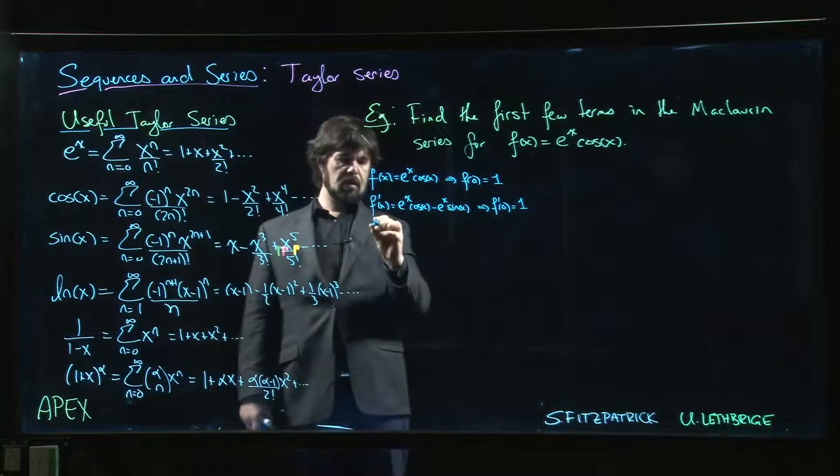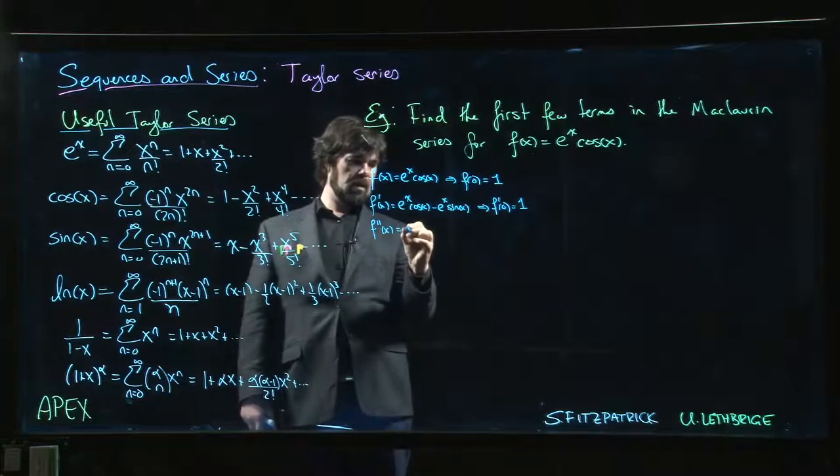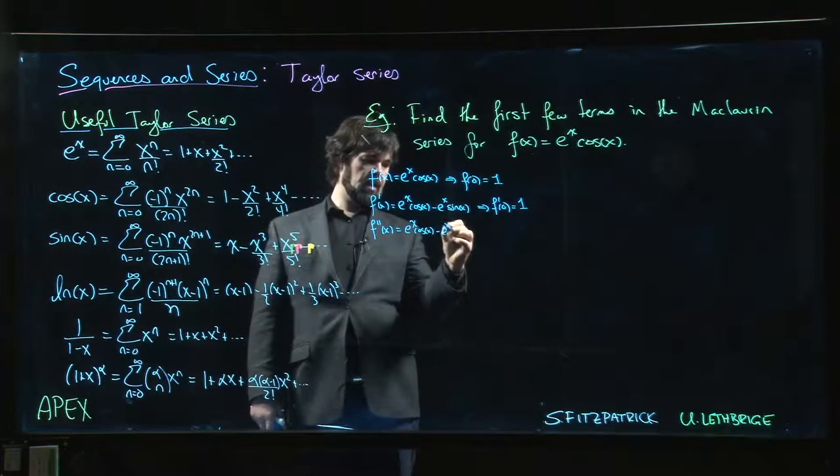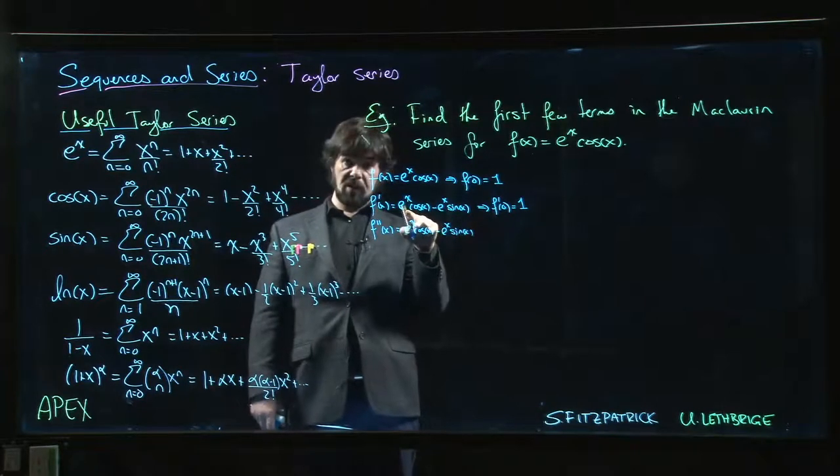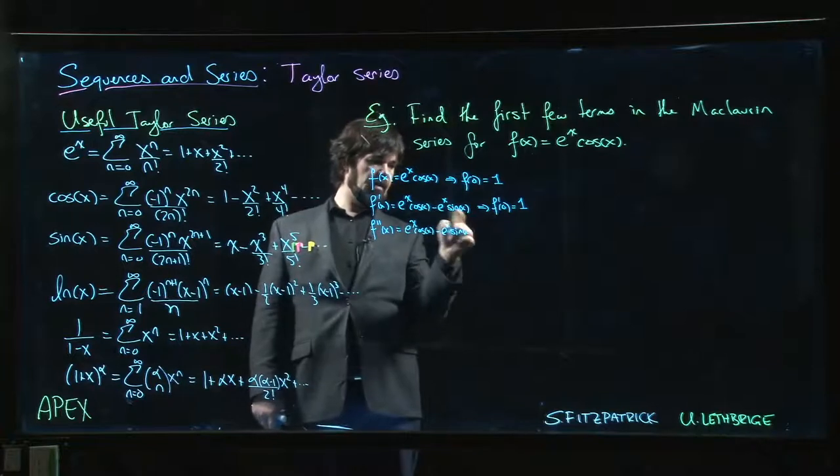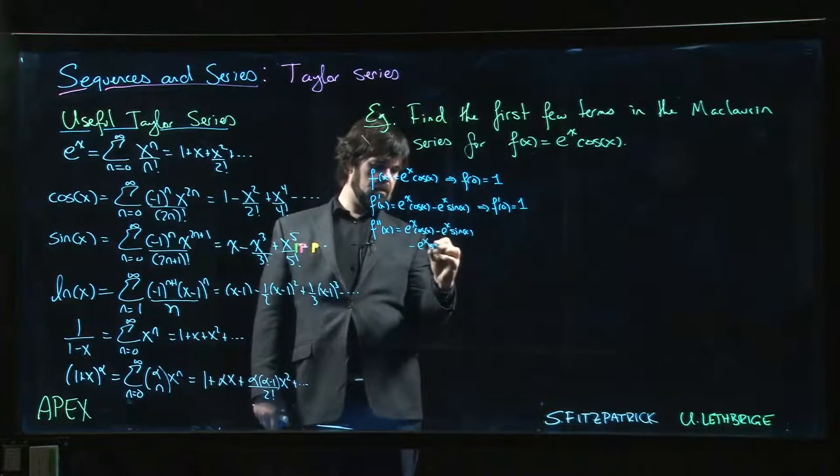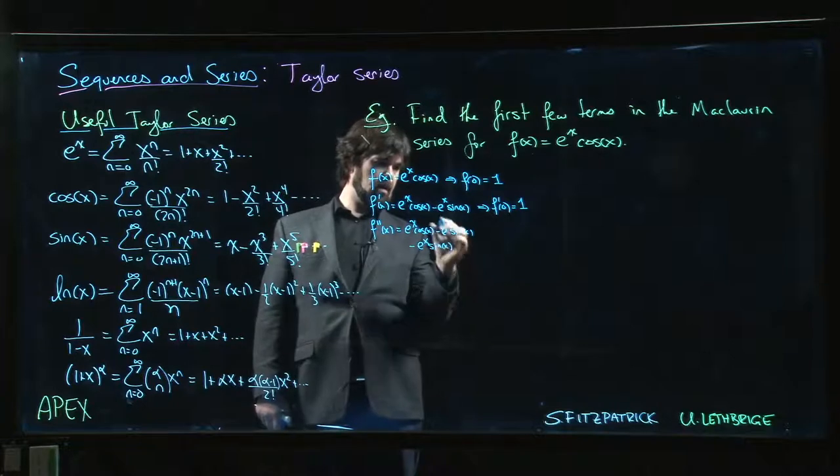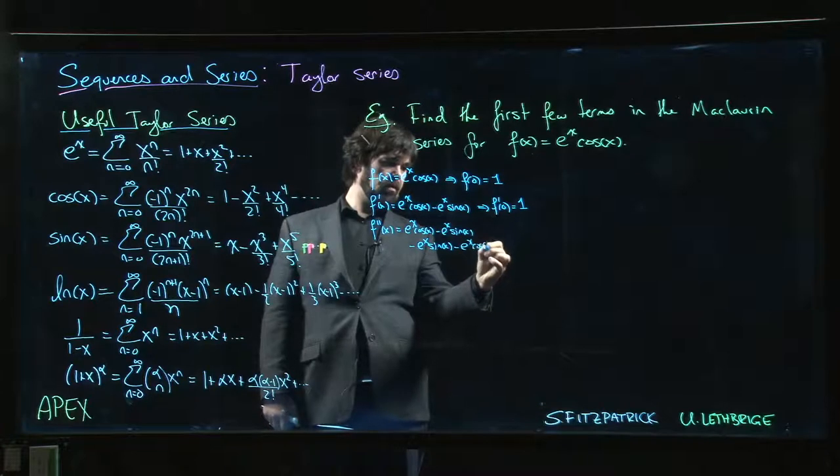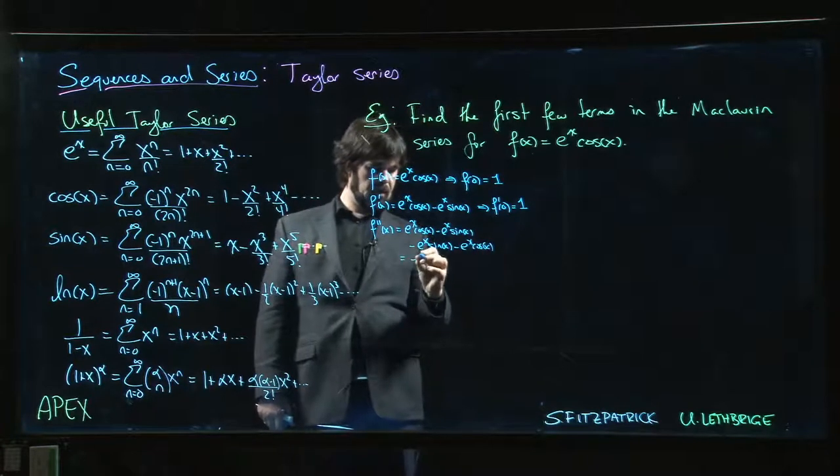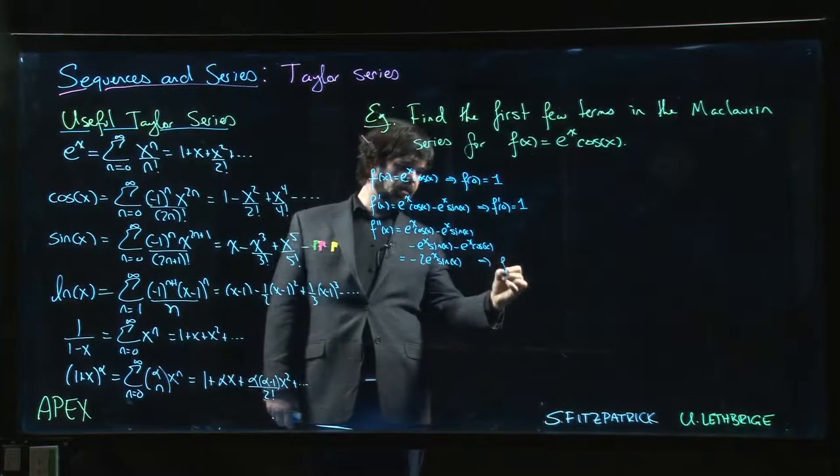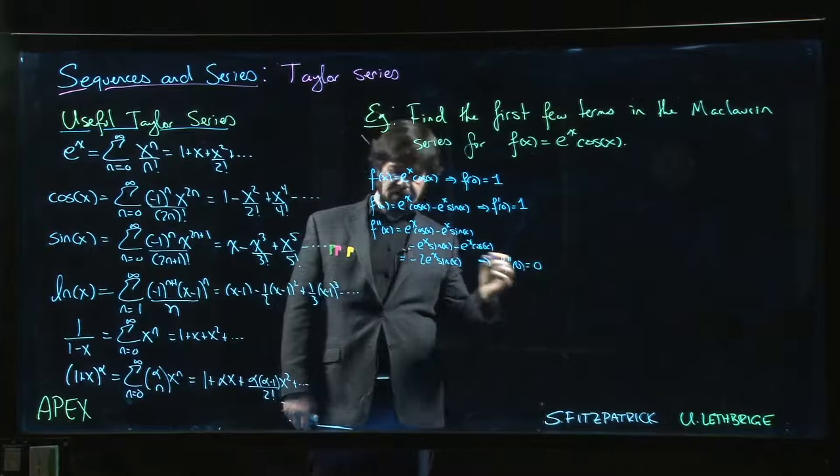And we get to the second derivative, we get e to the x cos x minus e to the x sin x. Still working on just that term, product rule. And then we're going to come over here, minus e to the x sin x, right? And then we're going to get minus, when I take the derivative there, e to the x cos x. So I actually get minus 2 e to the x sin x, which implies that the second derivative is 0.